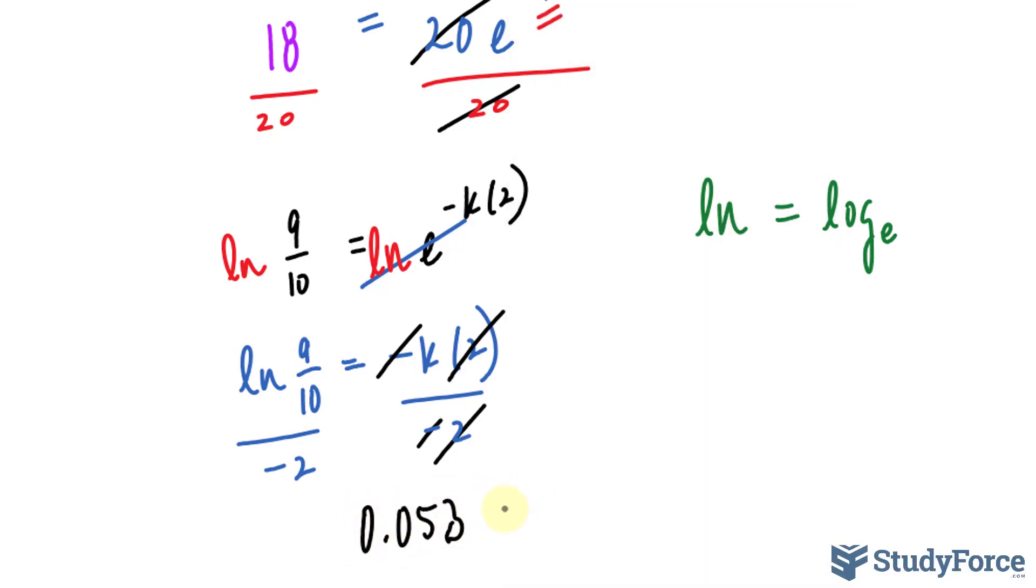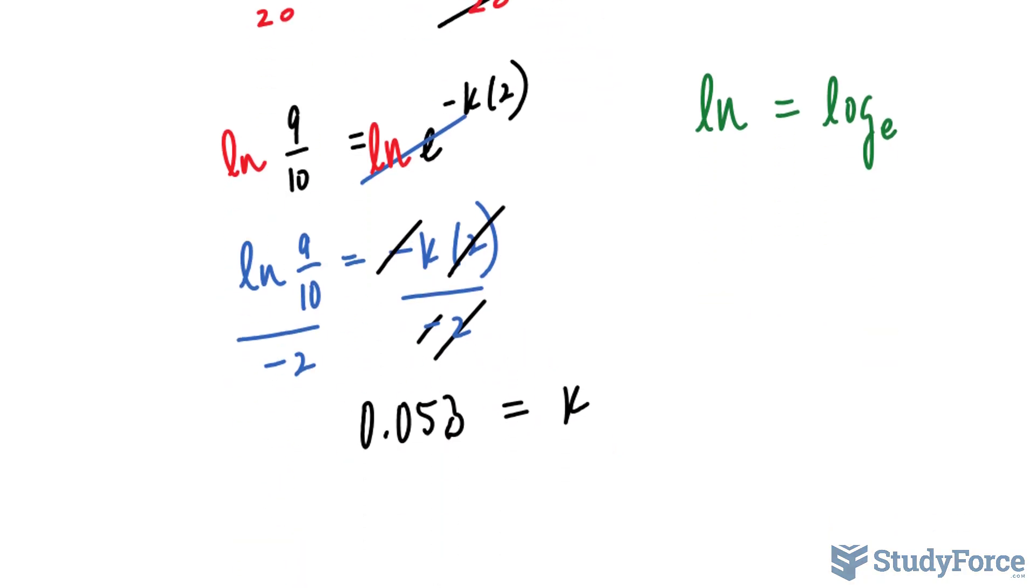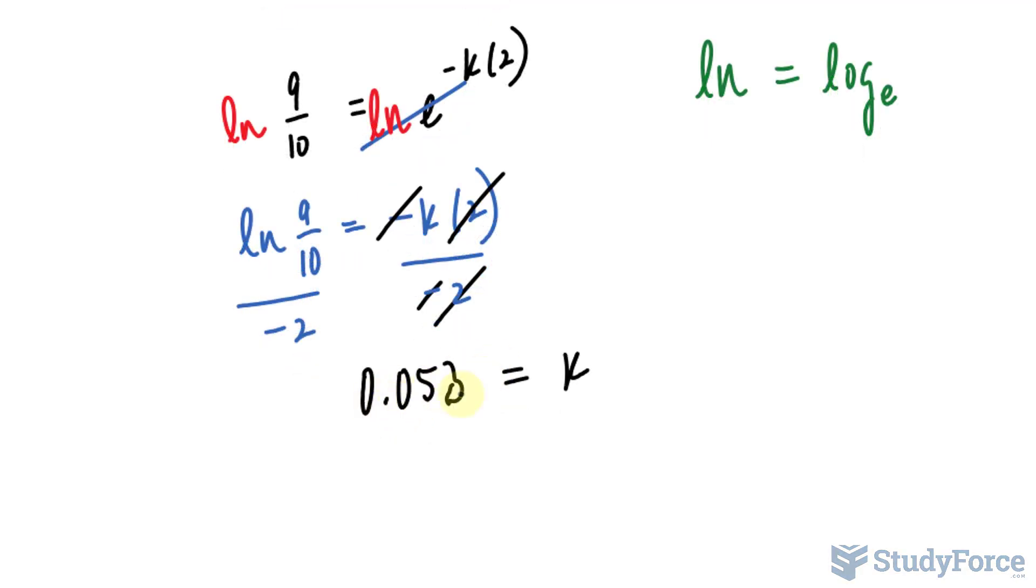0.053 is what K is equal to, and the units of this constant are the reciprocal of the units that we used for time, which was minutes. So it should be 0.053 per 1 minute.